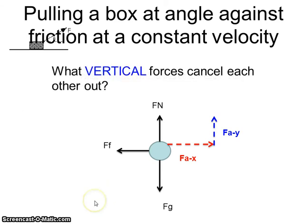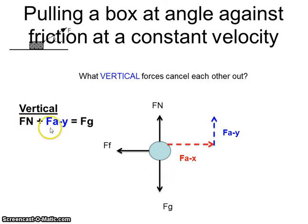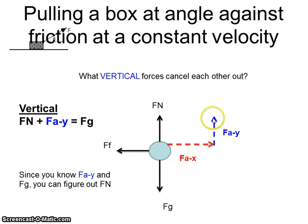What about my vertical forces? I have two up forces. I have one down force. So those two forces going up added because they're in the same direction equal my one force going down. So if you use your trigonometry and you calculate this value and you know your Fg, you can figure out your normal force using this equation.